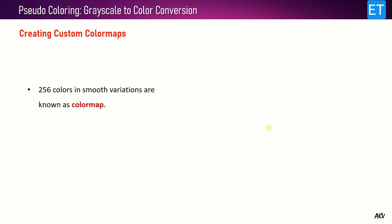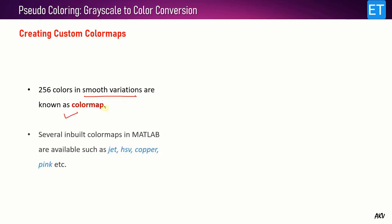These 256 colors used in smooth variation are known as a color map. MATLAB has various inbuilt color maps, so there's no need to create them manually. You can recall them by name — JET, HSV, Copper, Pink, and many others.